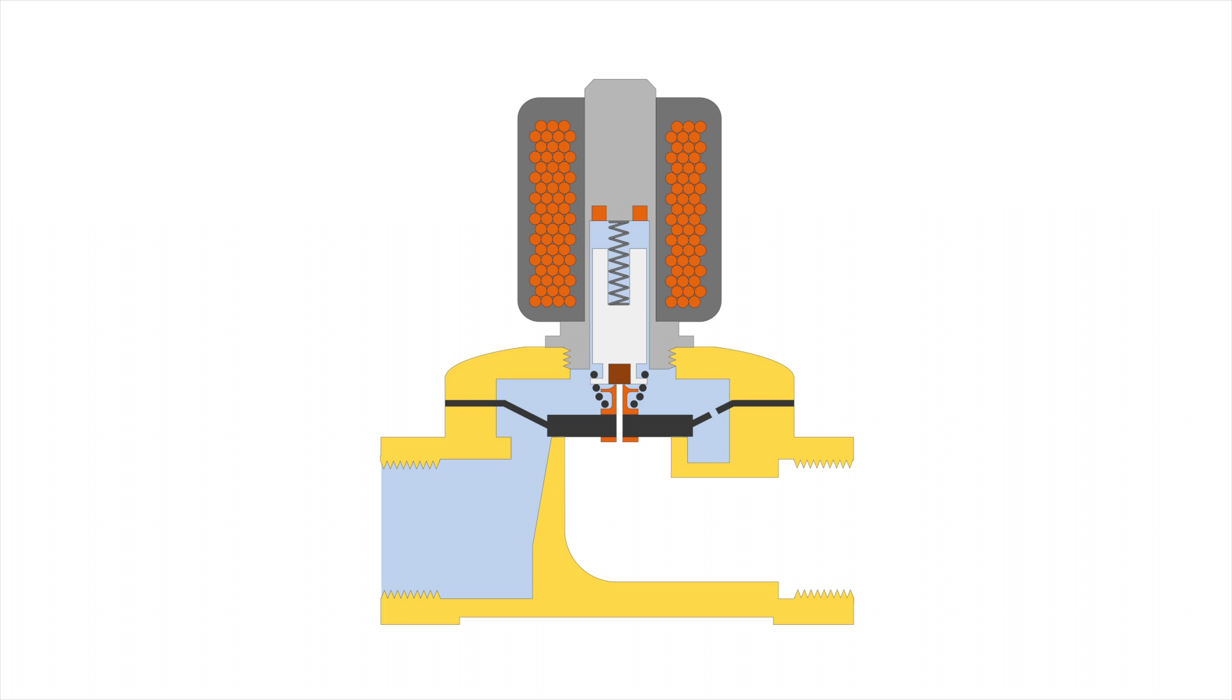Assisted lift or semi-direct operated solenoid valves combine the properties of direct and indirect operated valves. They make use of the differential pressure of the medium to open and close, but unlike indirect operated valves, they open from a zero bar pressure differential.